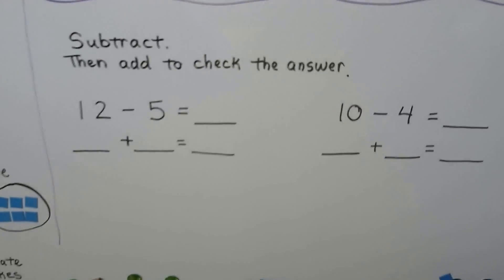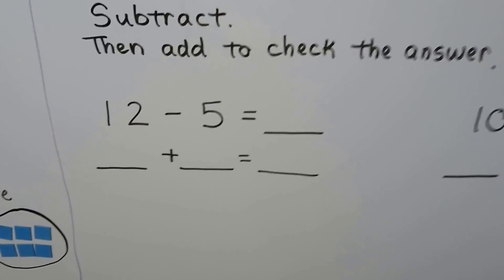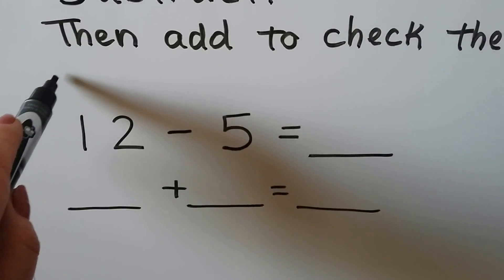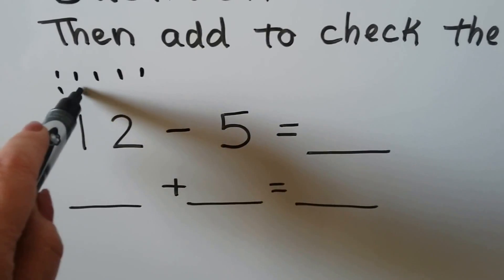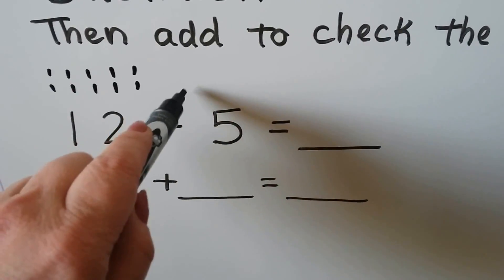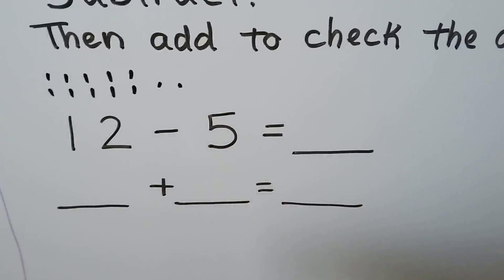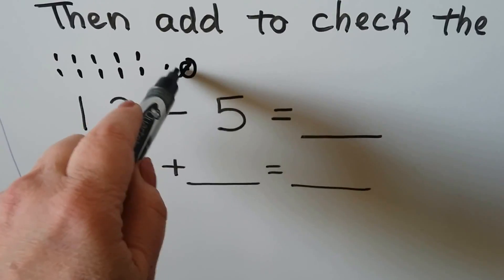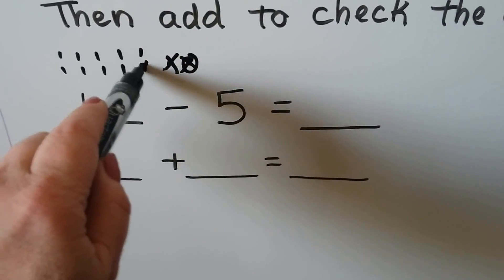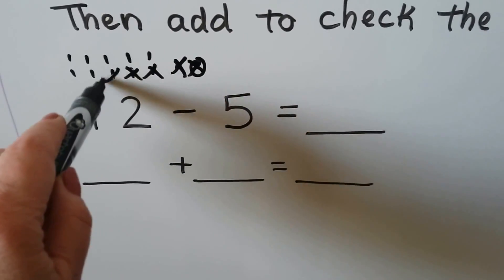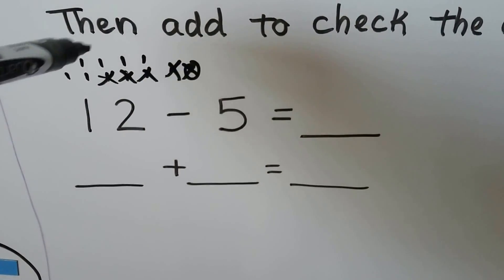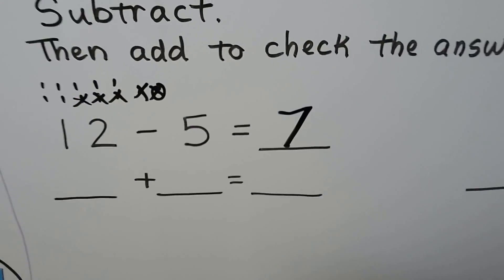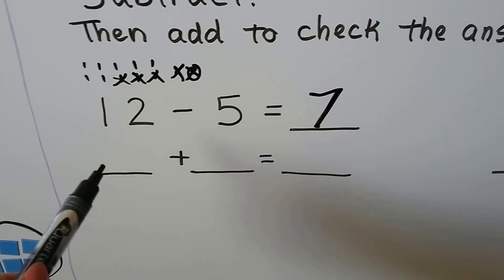Subtract, then add to check the answer. We have twelve minus five. We make twelve counters and take away five, leaving seven. The difference seven is going to be the addend to check it. Seven plus five, counting on: seven, eight, nine, ten, eleven, twelve.